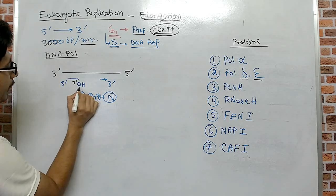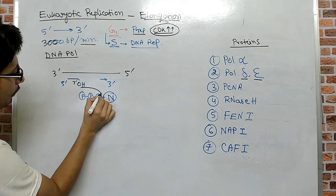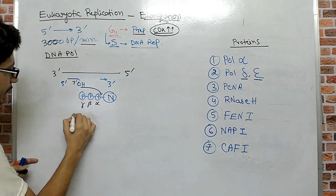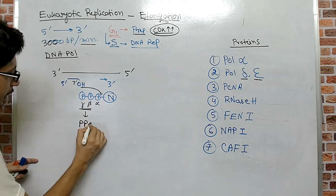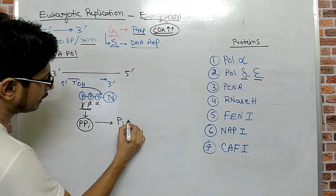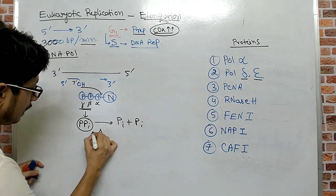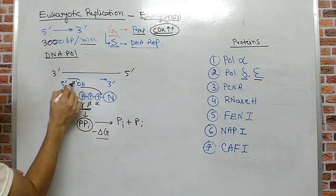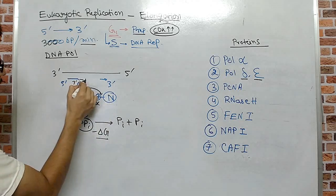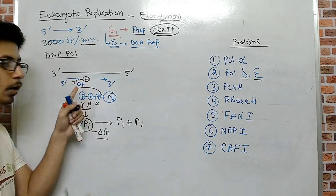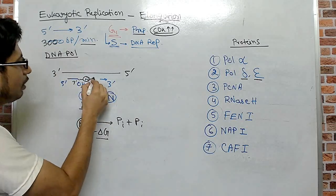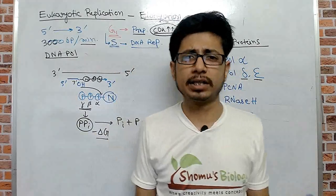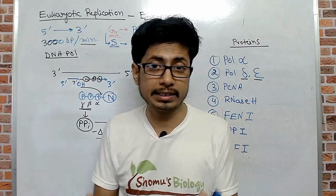We need a free 3 prime hydroxyl in order to catalyze the polymerization reaction by either DNA polymerase delta or DNA polymerase epsilon. This is a nucleophilic attack — it attacks the alpha phosphate, and as a result the beta-gamma phosphate is cleaved out as PPi. Further, this PPi is degraded to inorganic phosphate, giving a negative delta G value, which drives the reaction forward. By this fashion the nucleotide gets added to the backbone of the newly synthesizing DNA strand. This polymerization process is the same for prokaryotes, eukaryotes, and any other organism.